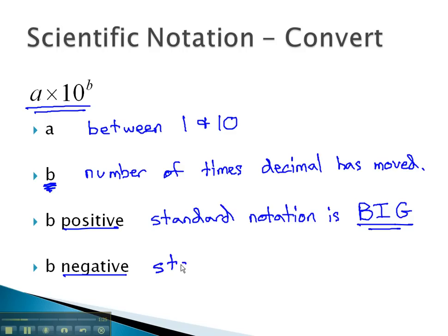If b is negative, this means our standard notation number is small. For example, a number like 245 one thousandths. This is a very small value and would have a negative exponent on the 10.